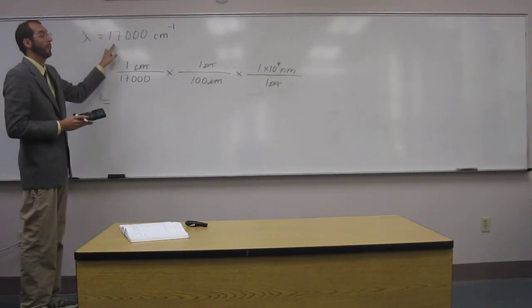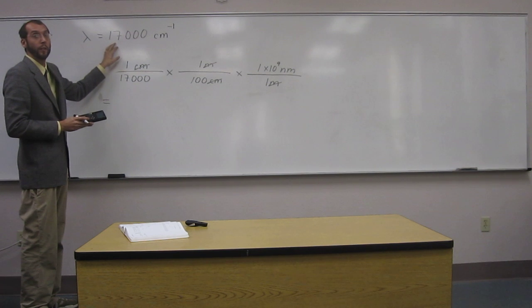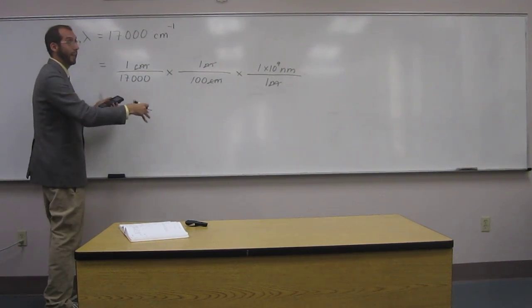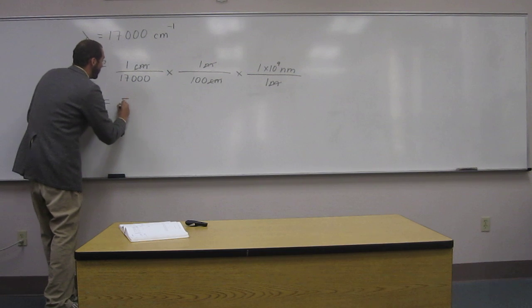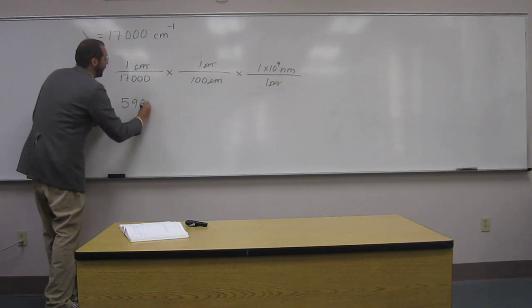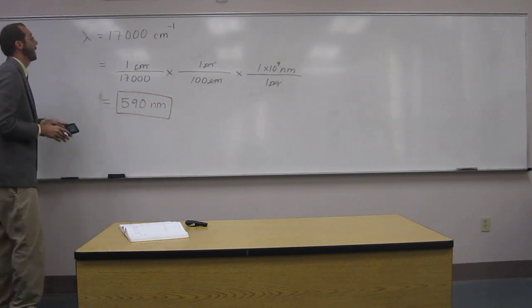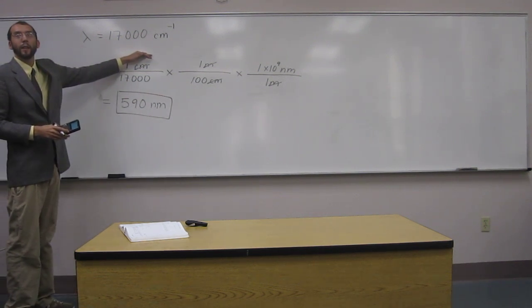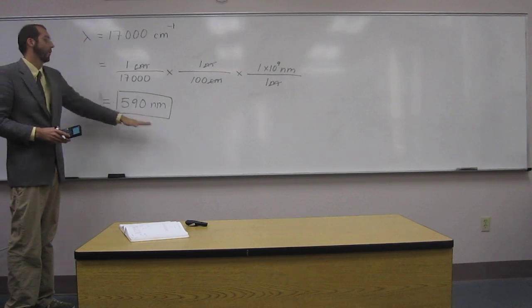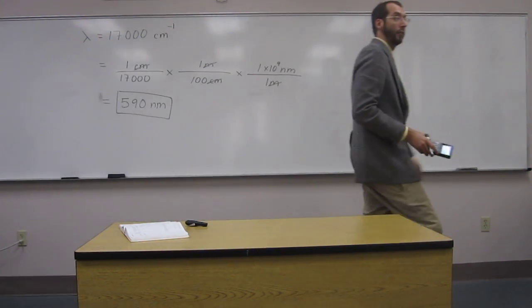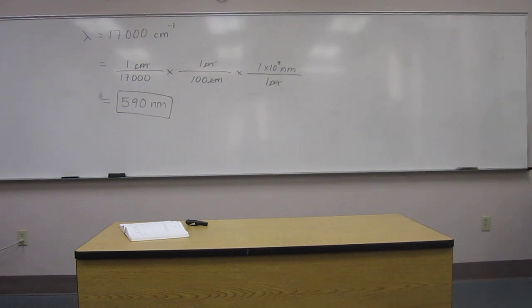So to two significant figures. So remember, this is two significant figures, because it says 588 in the answer, but to two significant figures, it's going to be 590 nanometers. So if you've got a band that comes at 17,000 wavenumbers, it's going to be coming at a wavelength of 590 nanometers. So if there's a question, ask before the thing turns off.